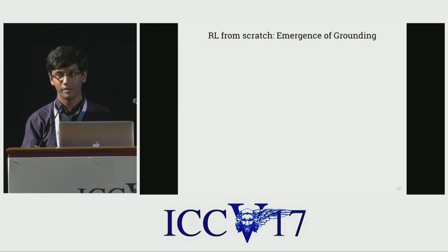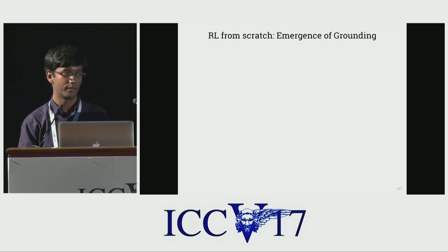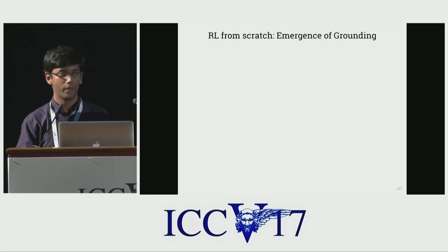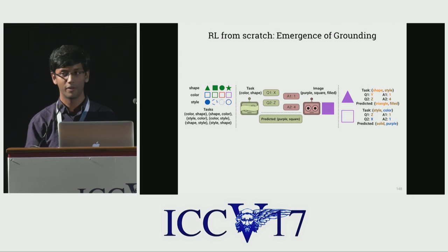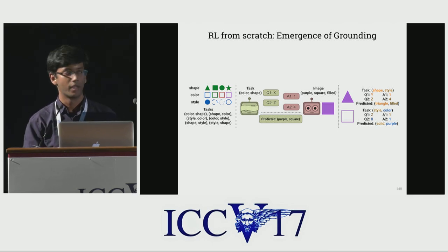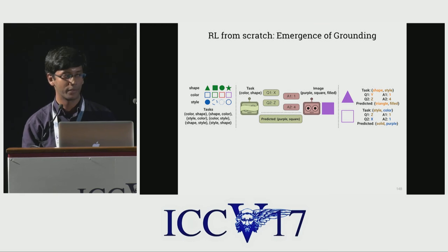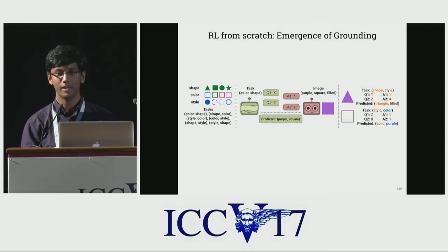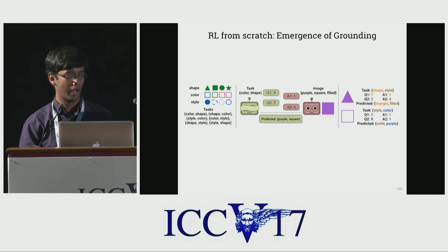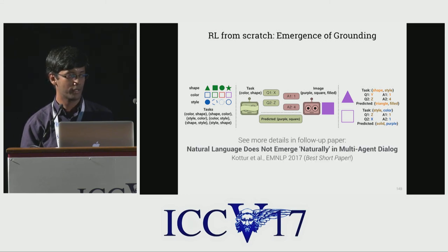All earlier results were after pre-training with supervision on the visual dialogue dataset. We also have an experiment where we initialize agents with ungrounded vocabularies and train via RL from scratch. With the right checks and balances, these agents learn to encode semantic concepts into discrete symbols. Follow-up work on this experiment is available in Sattvic's EMNLP paper.